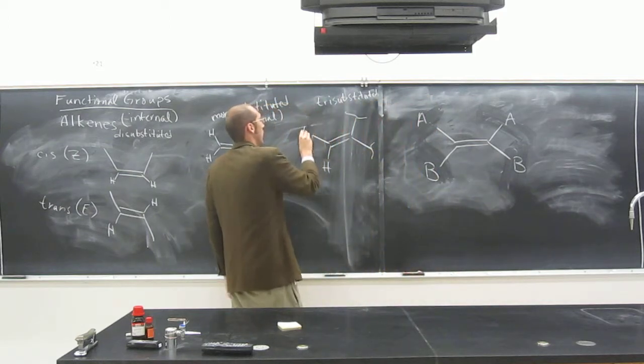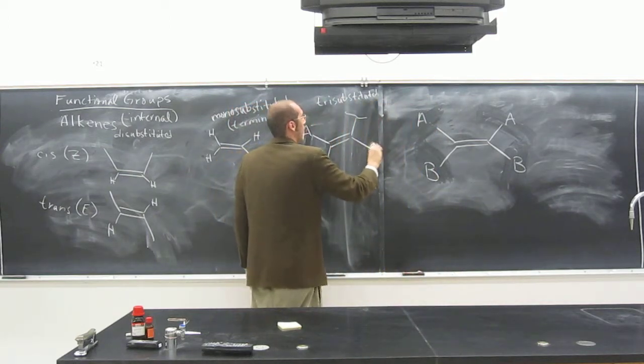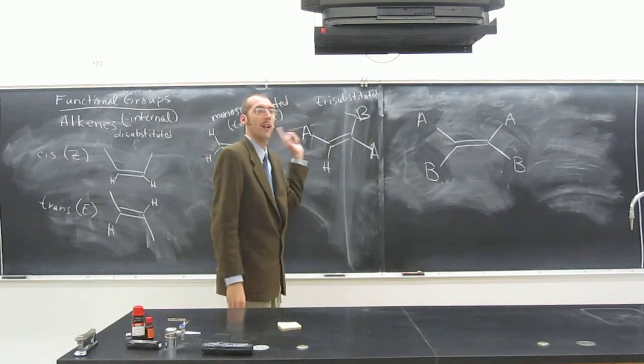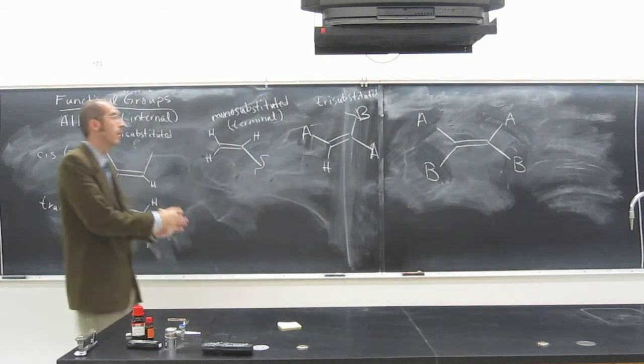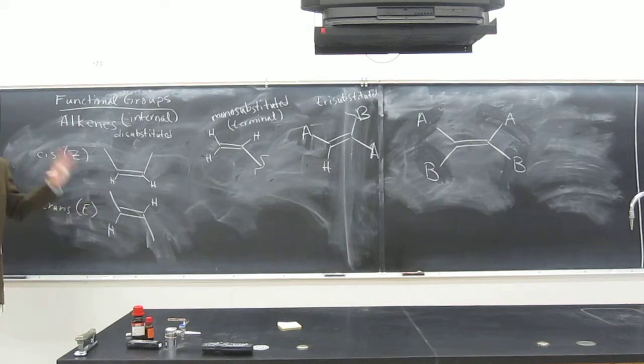So if we've got A here, A here, B here, right? Trans, okay? So all of the internals can be trans or cis, okay? So watch for the geometric isomerization of those.